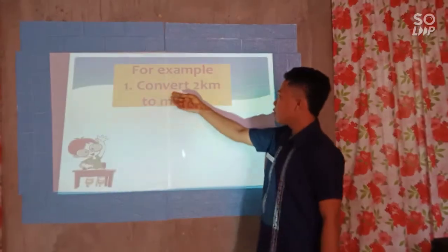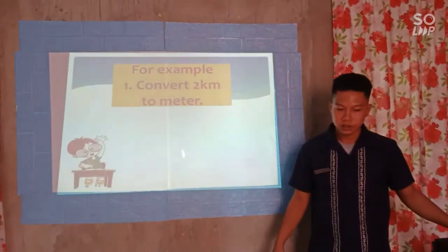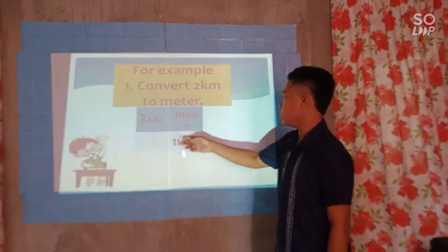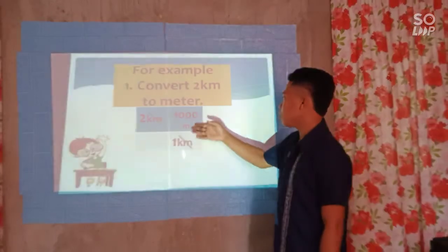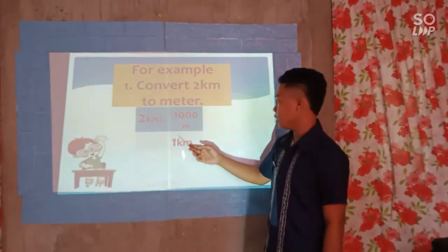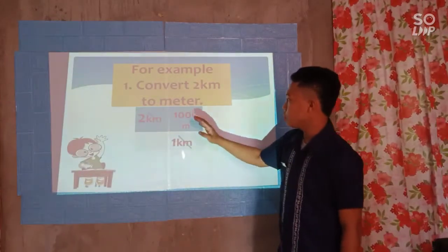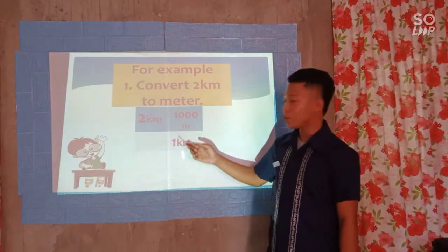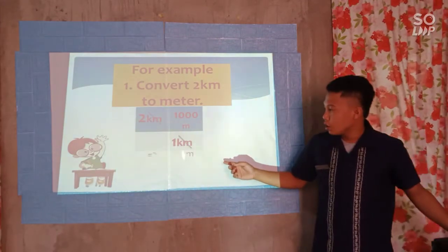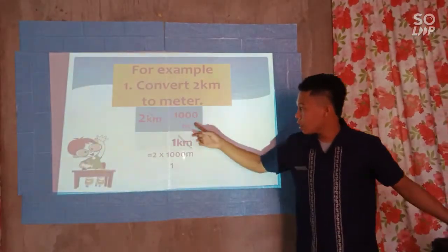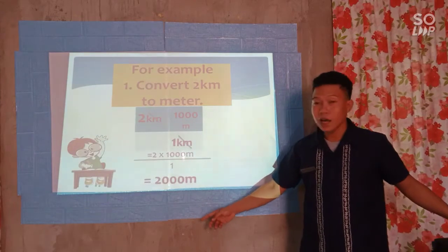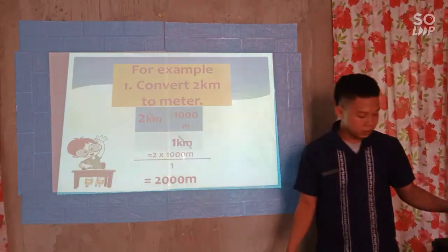For example, convert 2 kilometers to meters. Our given is 2 kilometers. 1 kilometer is equivalent to 1,000 meters. So, 2 kilometers times 1,000 meters over 1 kilometer — cancel out the same unit — 2 times 1,000 meters over 1 is equal to 2,000 meters.